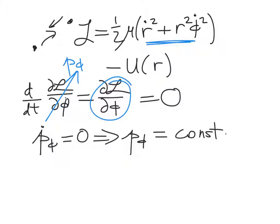And so this is an example of an ignorable coordinate. Phi is ignorable in this case, because its conjugate momentum is a constant.